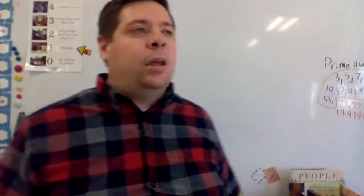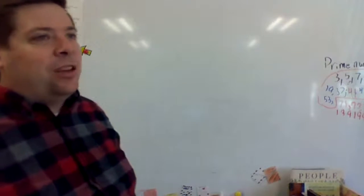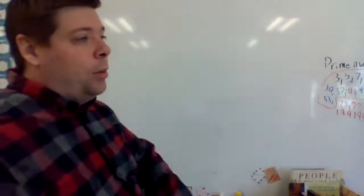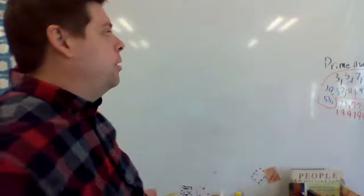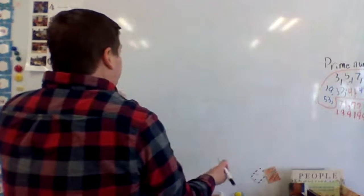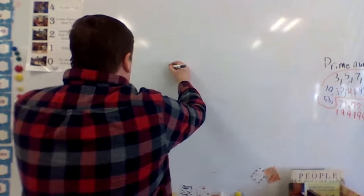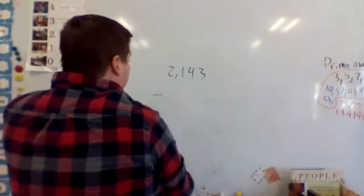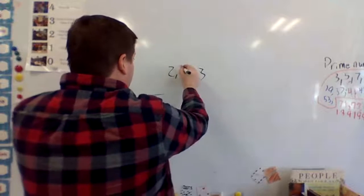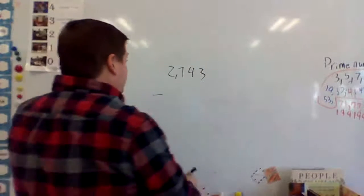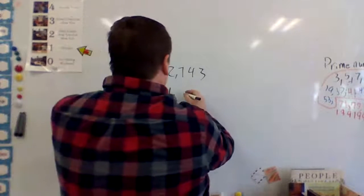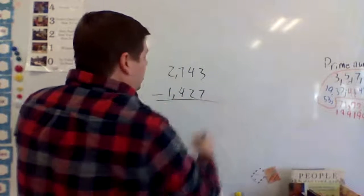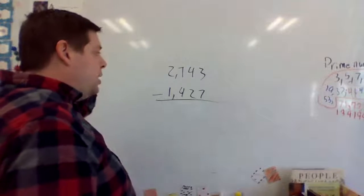Next I'll show two different ways to do subtraction. We've done a lot of standard algorithm, so now I'll do models first and then the standard algorithm one more time. Let's say I had 2,743 minus 1,427. I'll change the number slightly just to show how this works with regrouping.